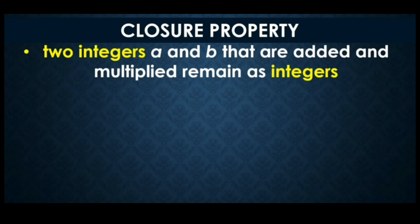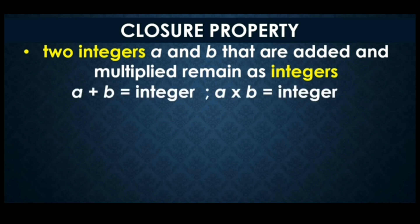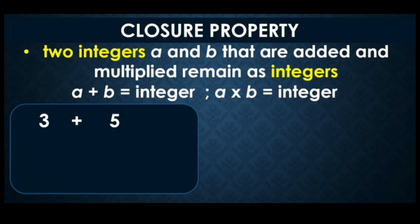Let's start with the first property: closure property. When two integers a and b are added or multiplied, the result will always remain an integer. So a plus b equals an integer, and a times b also equals an integer.